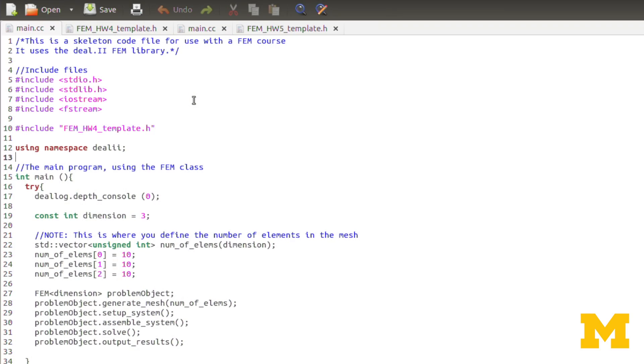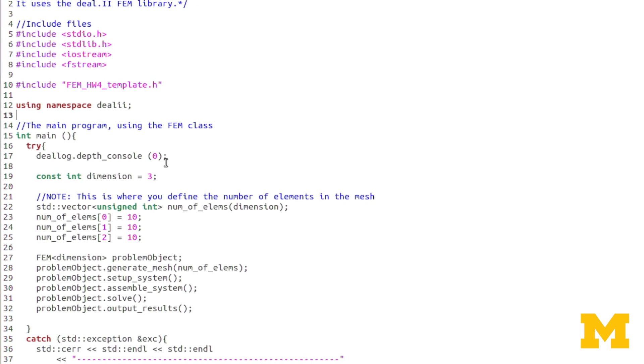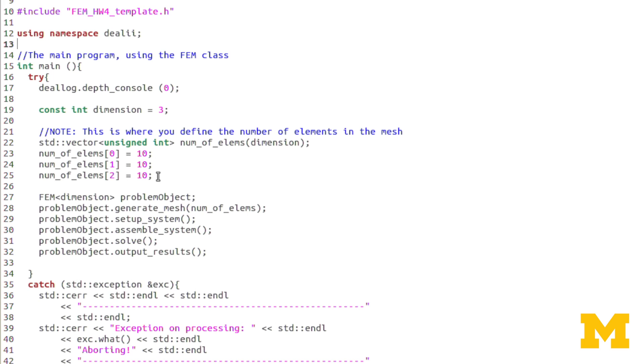So let's come over here to the code and we'll look first at the main.cc file. As you can see, almost nothing has changed from the previous homework assignment. I changed the name of the include file, but it's still 3D, passing in the mesh size. This is, for example, a 10 by 10 by 10 element mesh.